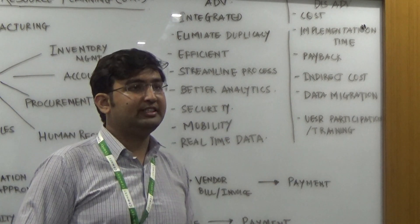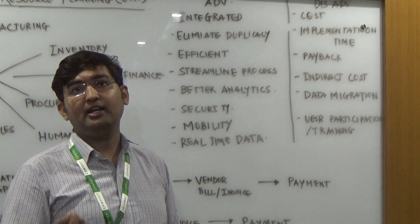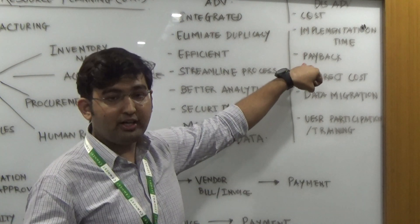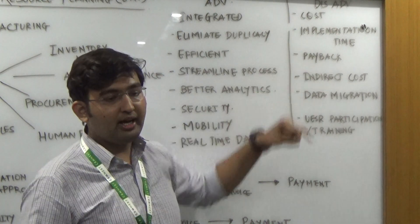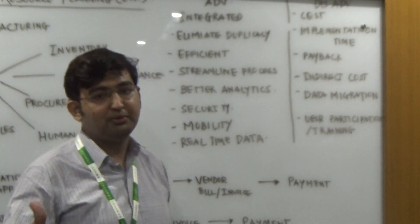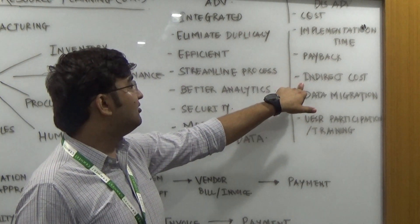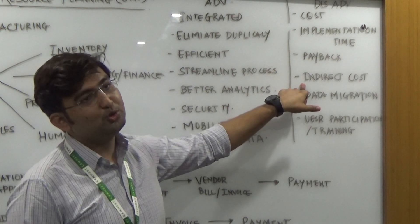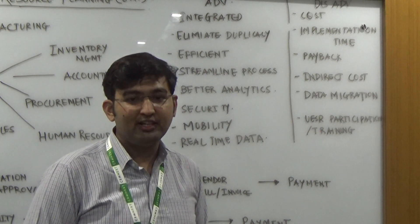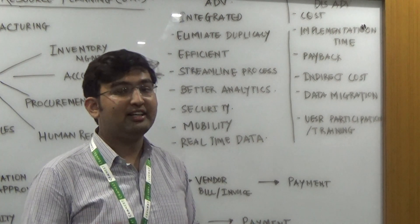Third is the payback. It is human and business tendency that as soon as you invest something, you expect a payback. ERP always gives payback over a period of time — it is not quick. After implementing, you can see the advantages and return on investment after five to six months, depending on the amount of data being handled. Fourth is indirect cost — when you switch to systems, there are servers, routers, internet plans that have to be updated everywhere, and many indirect costs that are included.